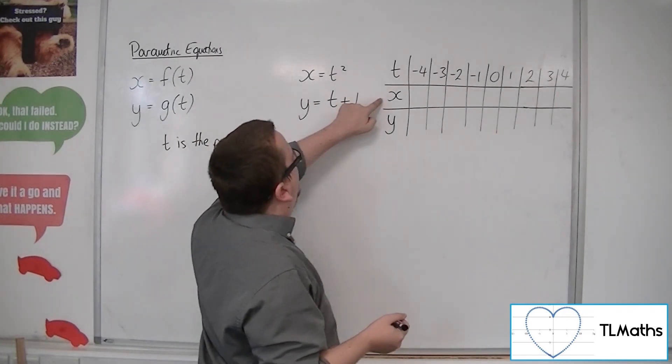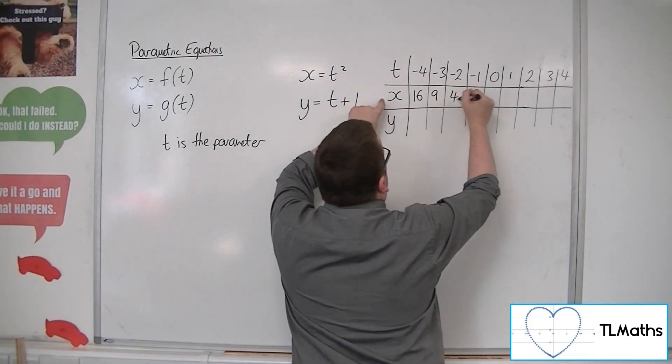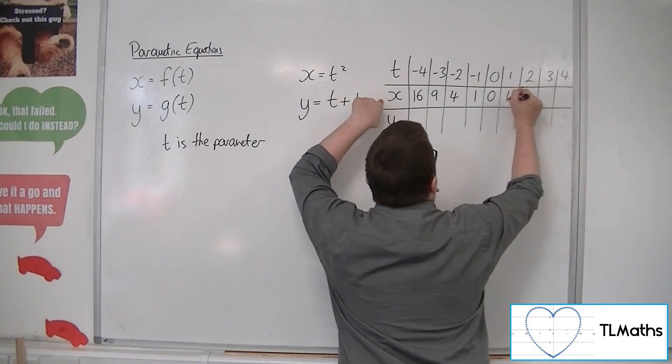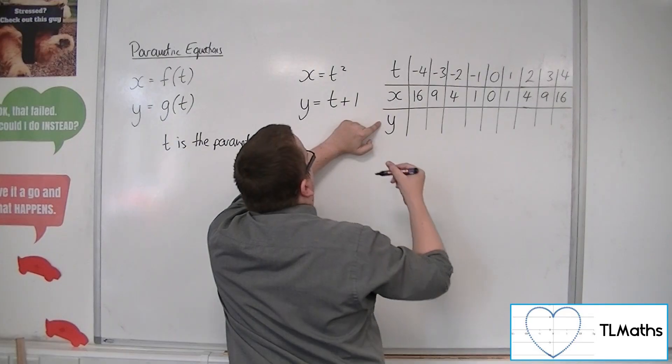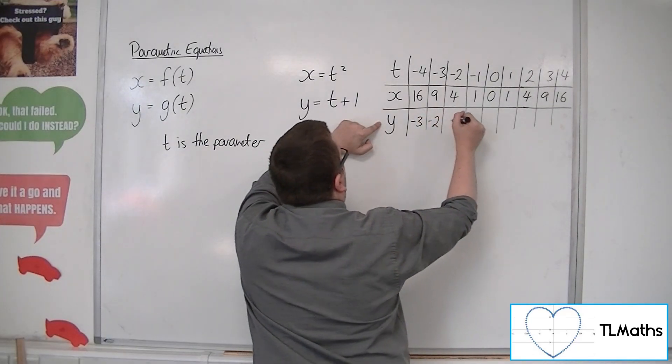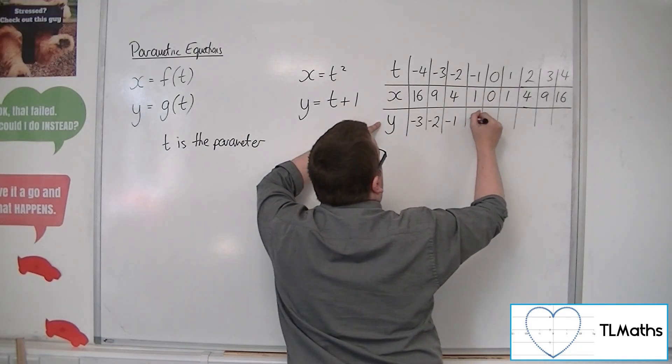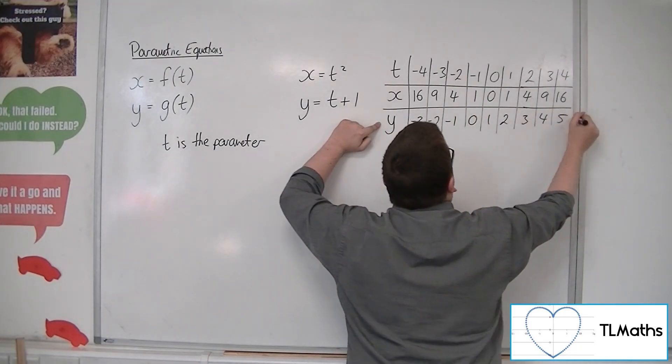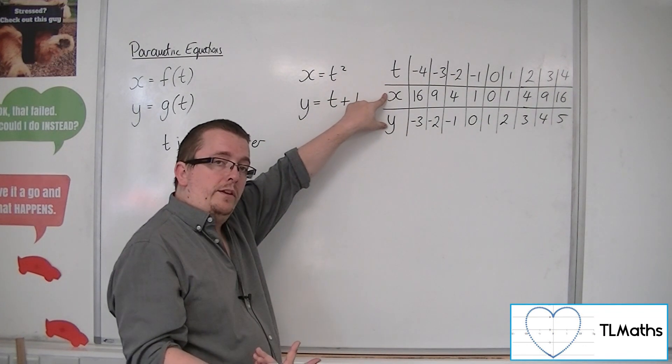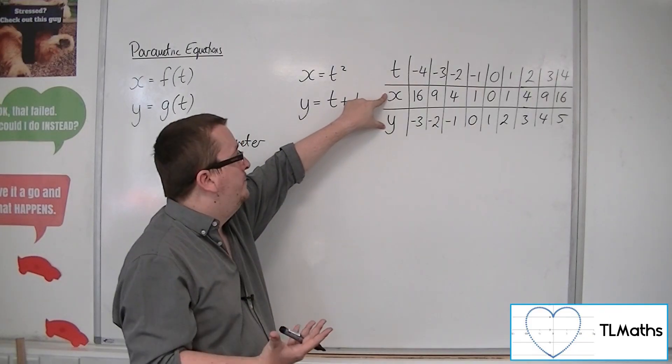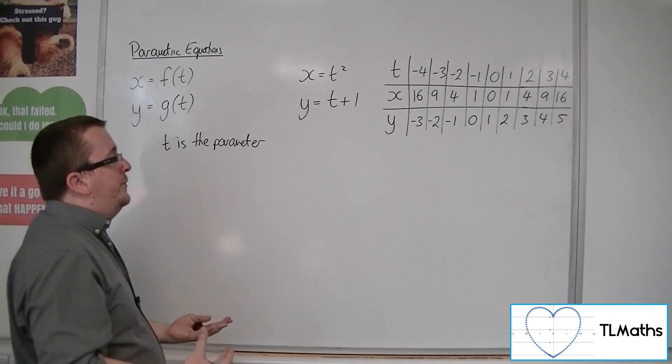So x is squaring t, so we get 16, 9, 4, 1, 0, 1, 4, 9, 16. And y is just adding 1 to t, so we have minus 3, minus 2, minus 1, 0, 1, 2, 3, 4, 5. The x and y are still the coordinates of the curve - it just so happens that x and y are governed by functions of t.